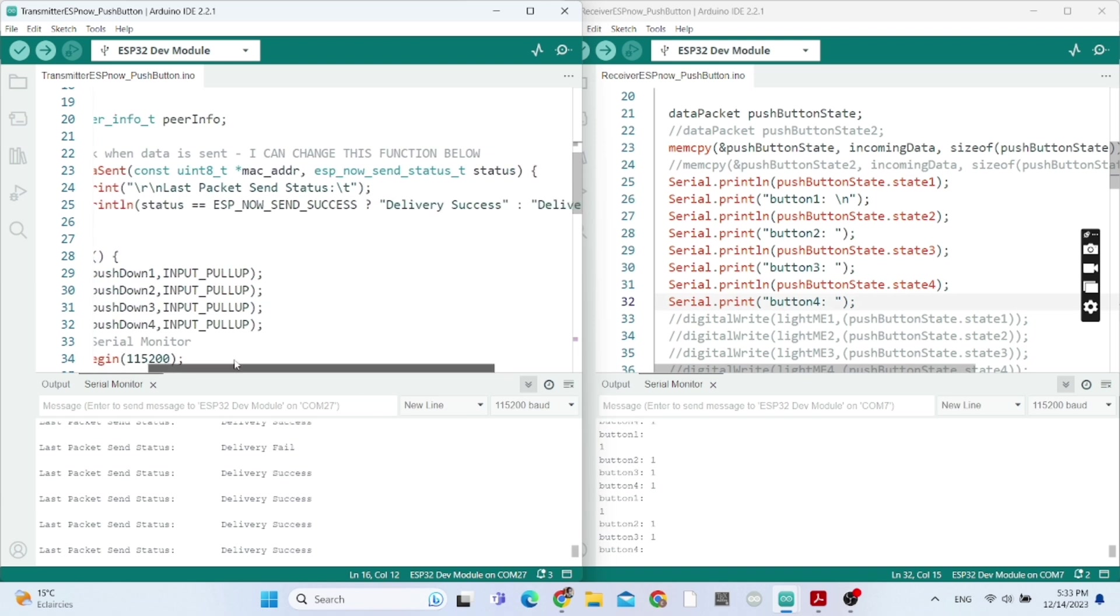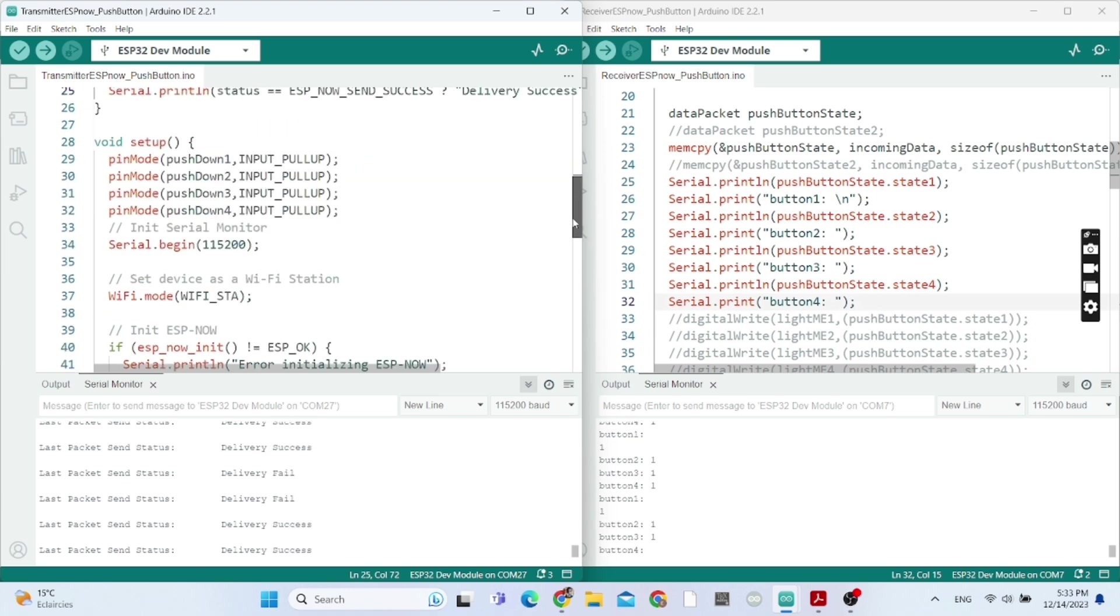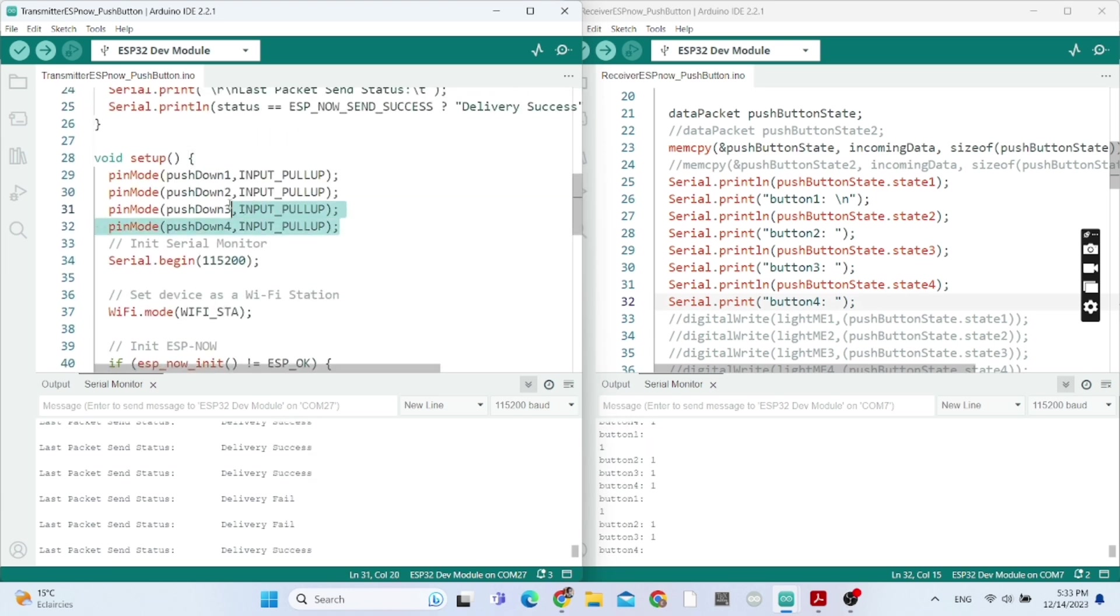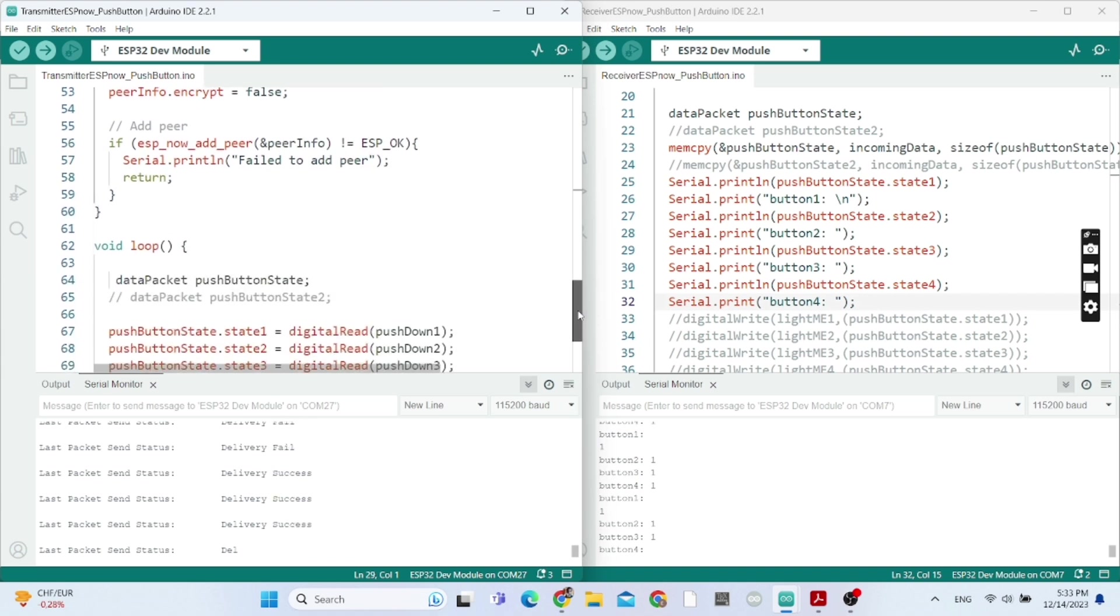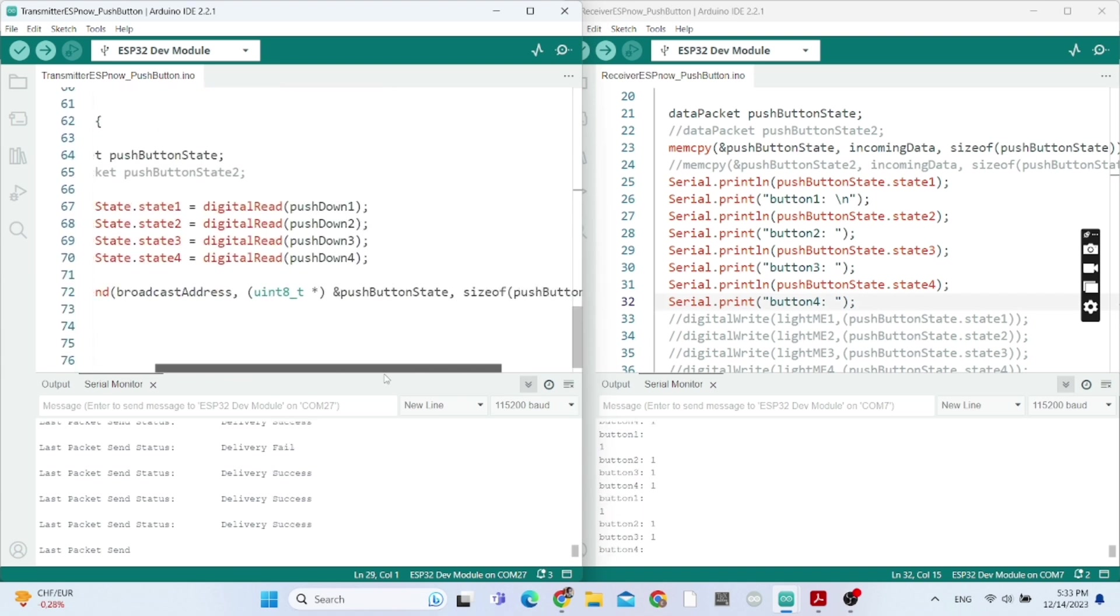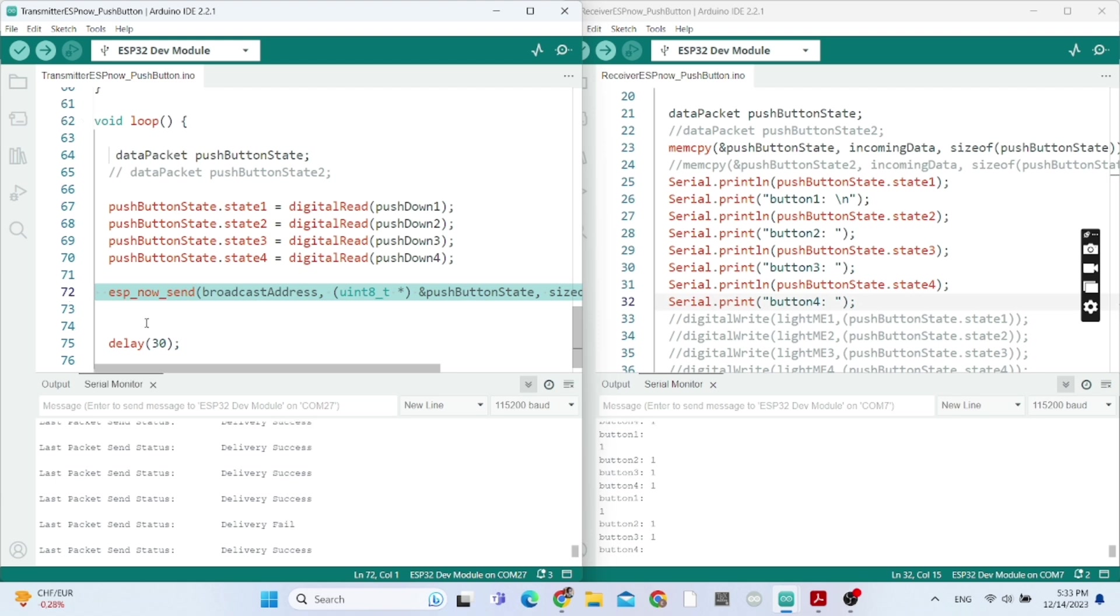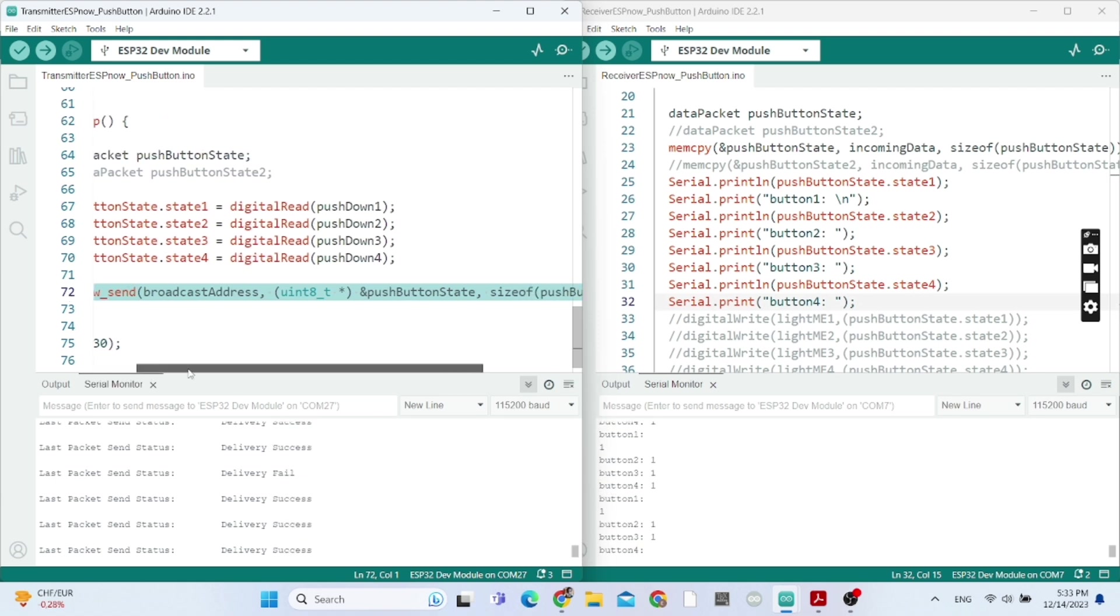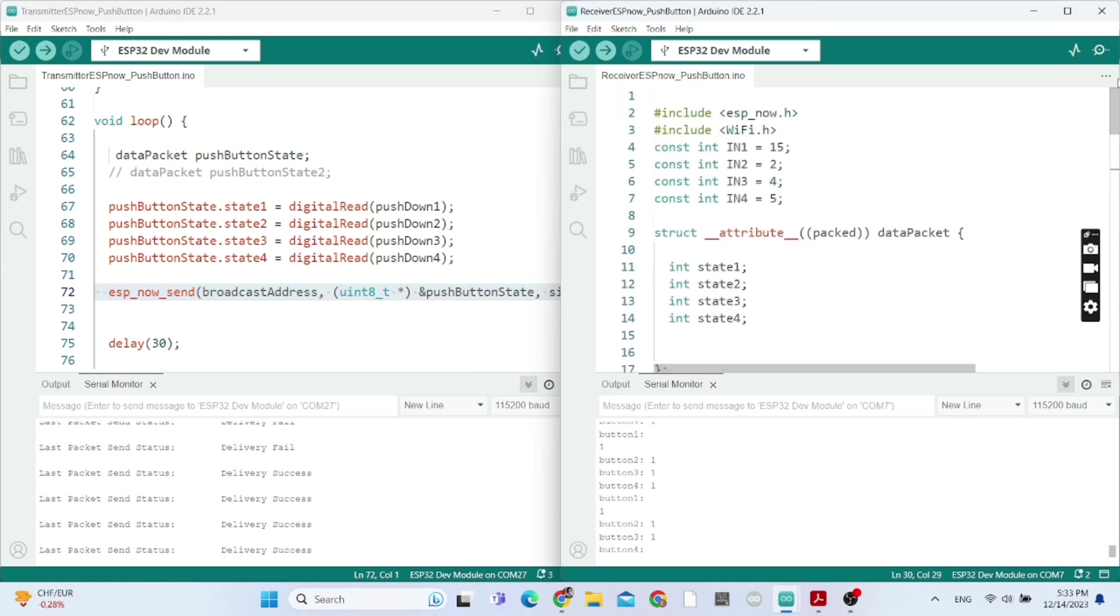So we are dealing with pull-up. If the delivery failed, it's going to print out that the delivery failed. Pull-up resistor, push button pull-up. So here we are broadcasting or sending the states of the four push buttons, and the delay is 30.